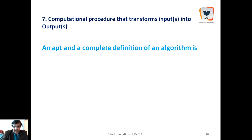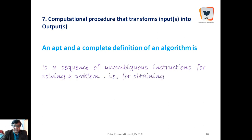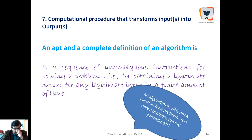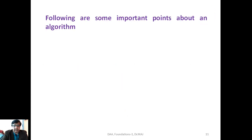The most apt and complete definition of an algorithm is: it is a sequence of unambiguous instructions for solving a problem — that is, for obtaining a legitimate output for any legitimate input in a finite amount of time. There should not be any ambiguity, uncertainty, or vagueness in the instructions. The output should be legitimate and correspond to legitimate inputs. An algorithm cannot run for an infinite amount of time; it has to run for a finite amount of time. Importantly, an algorithm itself is not a solution — it is only a problem-solving procedure.